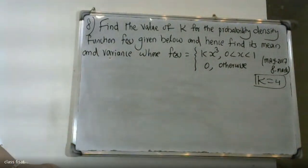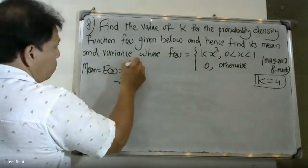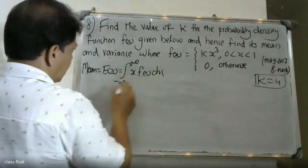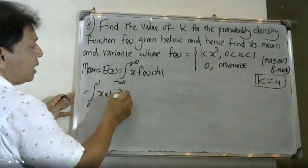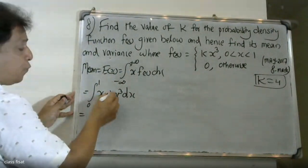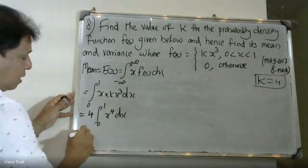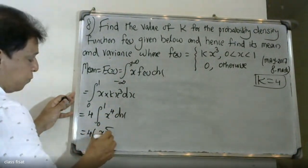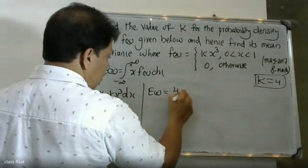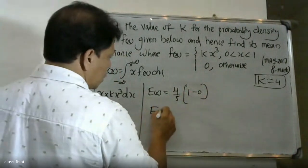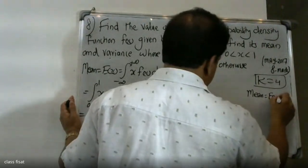The mean is the expectation of x, defined as the integral from minus infinity to plus infinity of x into f of x dx. Substituting f of x equal to 4x cubed, we integrate 4 times x raised to five by five from 0 to 1. That gives the expectation of x equal to four by five. So the mean is equal to 4 by 5.